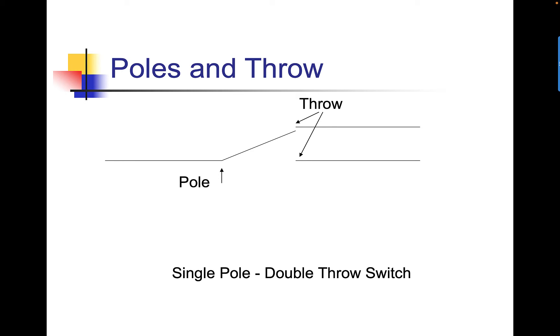The pole and the throw. This is a single pole, double throw switch. When it's up in this area here, this is a connection. That's one option. When the line comes down to here, this is another option. It comes down a little bit further.